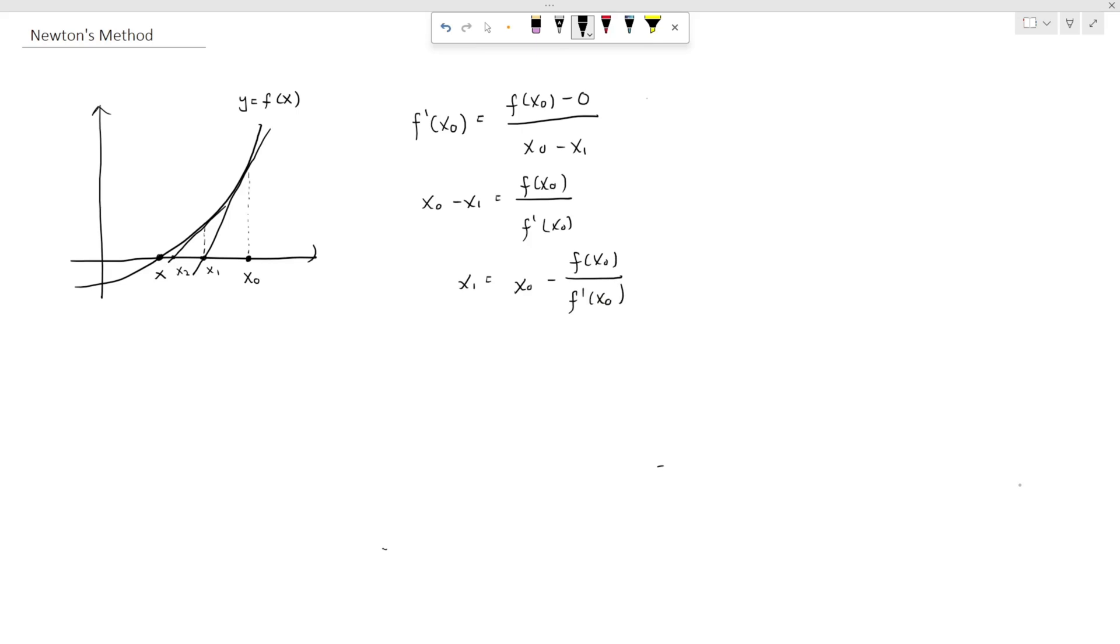Then, how do we find the formula for x2? Well, it's basically the same idea. So the general formula is xn plus 1 is equal to xn minus f of xn over f prime of xn.